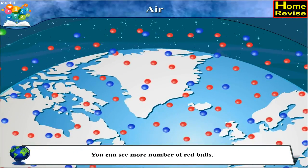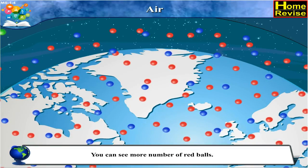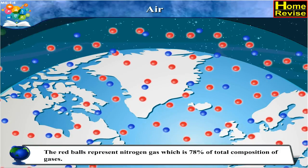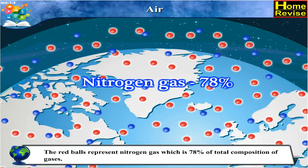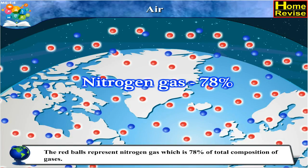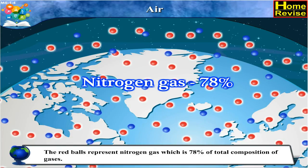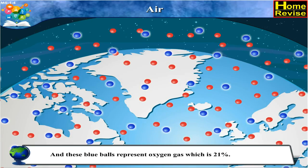Here, you can see more number of blue and red balls. The red balls represent nitrogen gas, which is 78% of total composition of gases.